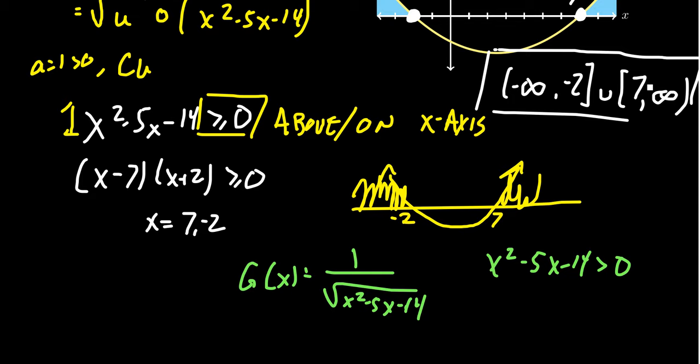So in that situation, the domain of g would be negative infinity to negative 2, union 7 to infinity, but this time the endpoints negative 2 and 7 would not be included.